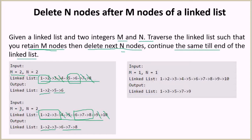Here m is equal to 1 and n is equal to 1, so both are equal to 1. So we retain 1, we delete 2, we retain 3, we delete 4, we retain 5, we delete 6, we retain 7, delete 8, we retain 9 and delete 10. So we have these alternate numbers as the output.